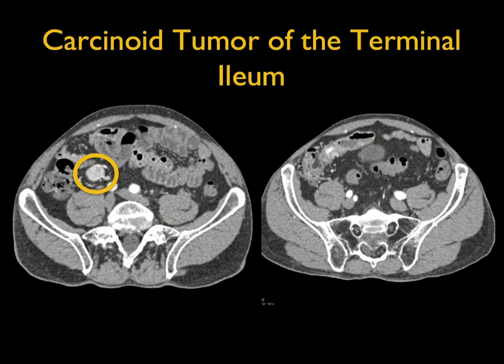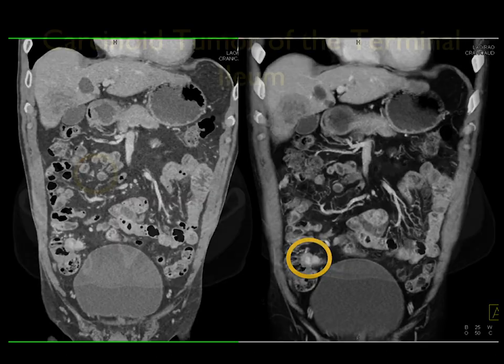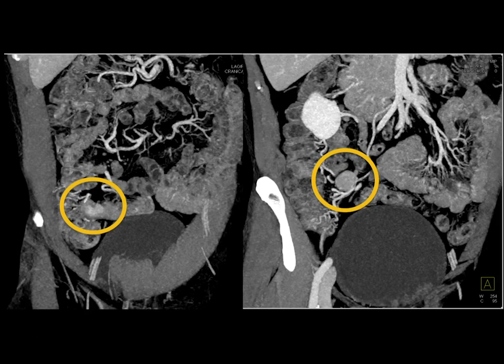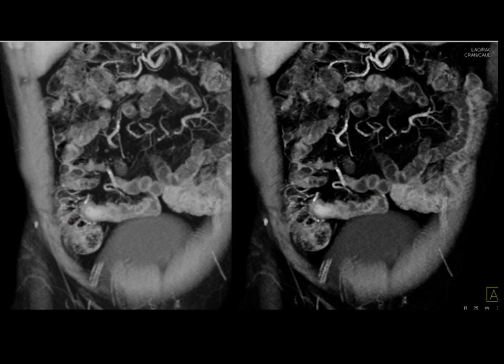One challenge is finding the primary lesion in the small bowel, and it's important to remember these lesions can be multiple. Here the diagnosis of the mesenteric mass with desmoplastic reaction is easy, but where's the primary? Looking carefully, you can see an enhancing lesion in the patient's colon, and on coronal views a bilobed lesion in the terminal ileum. This was multifocal carcinoid tumors. You need to keep looking — it's careful inspection across multiple image sets that allows us to make the diagnosis.